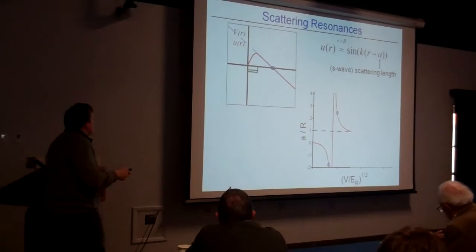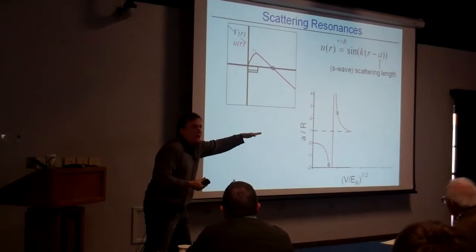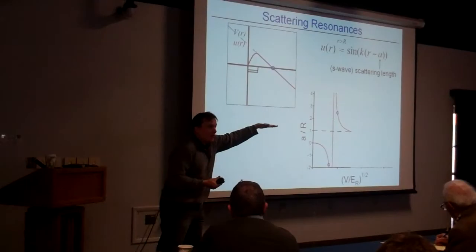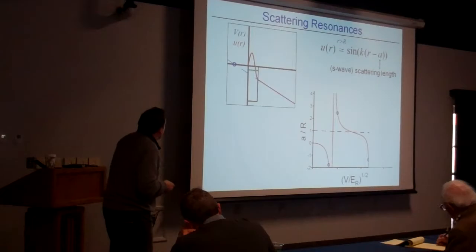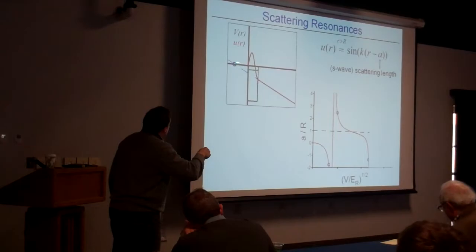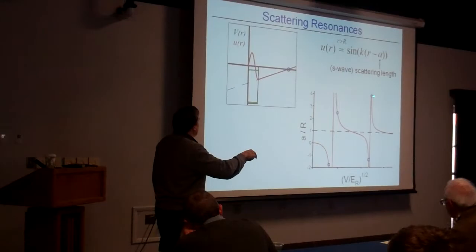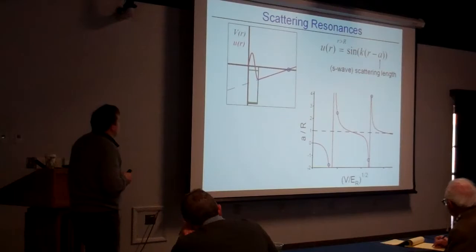Following what happens as we pull more on this potential: we get successive resonances where the scattering length changes sign. In summary: we can get tunable interactions by varying the interaction strength between spin-up and spin-down atoms. A spin-polarized Fermi gas of all-red guys has no S-wave interactions, but if we take two spin states — say red spin-up and blue spin-down — those are distinguishable by their spin and can scatter.